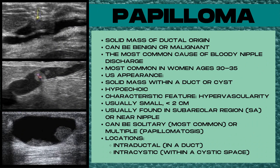Our most common intraductal mass is known as a papilloma — a solid mass found within the milk ducts. It can be found intraductally within a duct or intracystically within a cystic space. Most commonly they're benign, although they can be malignant, and papillomas are the most common cause of bloody nipple discharge. They're most common in women in their 30s. The ultrasound appearance is a solid, hypoechoic mass within a duct or a cyst, and their characteristic ultrasound feature is hypervascularity. They're usually small — less than two centimeters — usually found near the subareolar region, and can be solitary (most common) or multiple within a duct, known as papillomatosis.